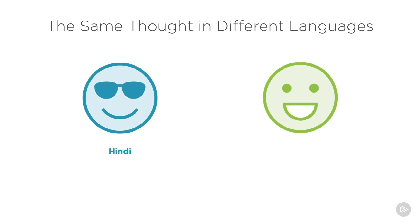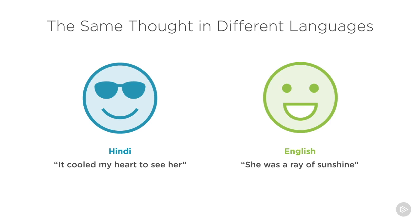In Hindi you would say something like "it cooled my heart to see her" — this would be colloquially completely appropriate. In English on the other hand it would make total sense to describe this person as "a ray of sunshine." Notice how the idiom in each language corresponds to the type of climate that is sought after or comfortable in the geography where that language originated.